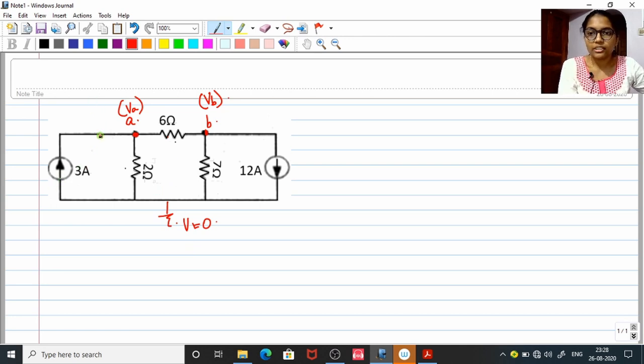Let us start marking the current directions. Here it is known that 3 ampere current is incoming. And in this branch, no direction is given. So if you do not know the direction of current, you please have a mindset that if you do not know the current, then go for an exiting current. Let this be I1 and let this be I2.